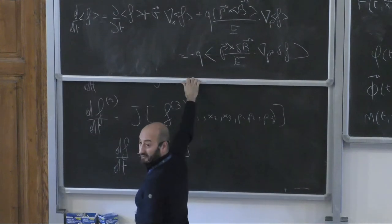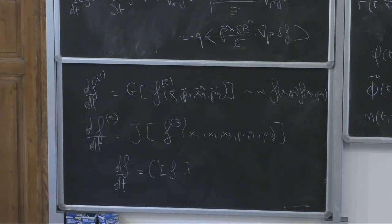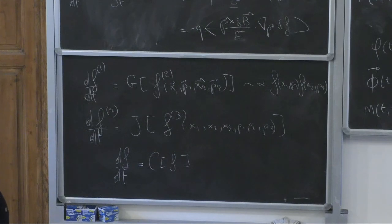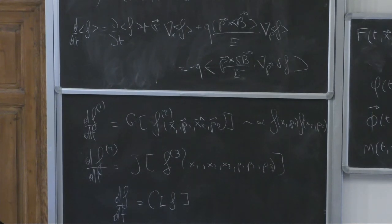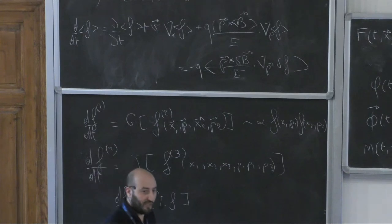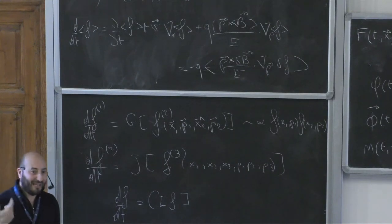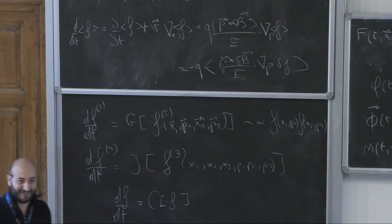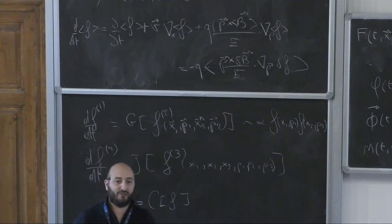If we perform the ensemble average of the equation, we get an equation for ⟨f⟩ containing ∂⟨f⟩/∂t + v·∇⟨f⟩, plus a Lorentz term with the mean field on the left-hand side, and a residual piece involving δB and δf on the right-hand side. We have learned that in terms of the ensemble-average distribution, it is not conserved — unlike f itself. This is because you are doing a coarse-graining and losing information; from an information-theory perspective, entropy must increase.